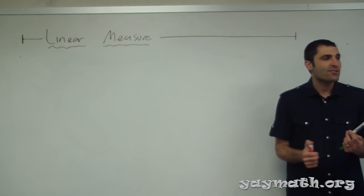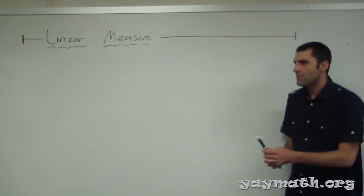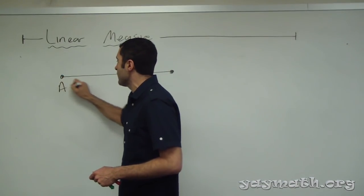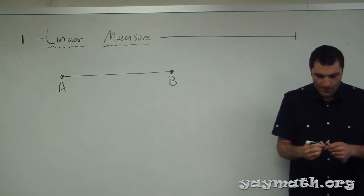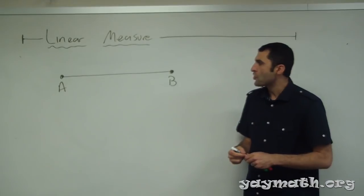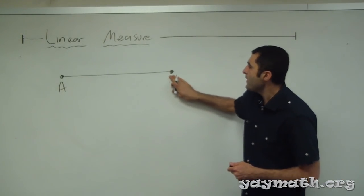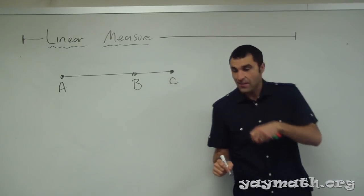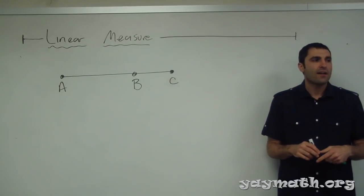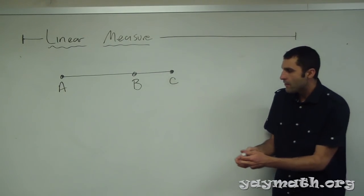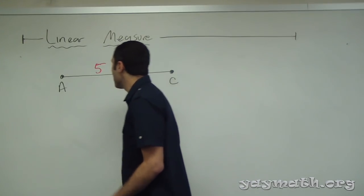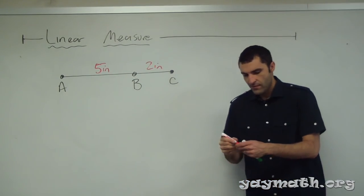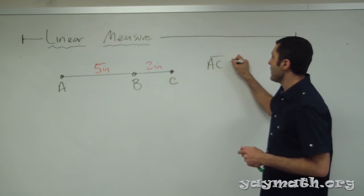This is called linear measure — it's actually pretty straightforward. Please draw this line segment; let's call it AB. Now, if AB was five inches and BC was two inches, we could put over here: AC the segment equals how many?